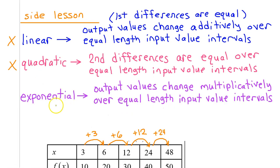We have learned that an exponential model will be best if the output values change multiplicatively, say it with me, over equal length input value intervals. So guess what? Since we don't have equal length input value intervals, we will not choose exponential either.